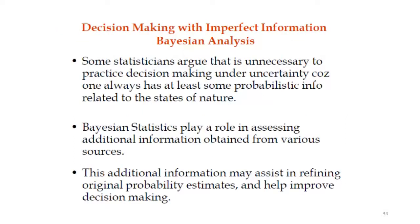Now let's discuss decision making with imperfect information — where our information is not 100% correct, only a little bit, which we normally call imperfect information. Some statistical scientists argued it is unnecessary to make decisions purely under uncertainty, because one always has at least some probability information about the states of nature. They recommend using this additional information if available.